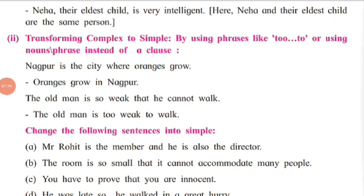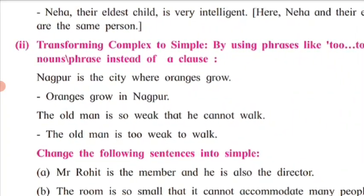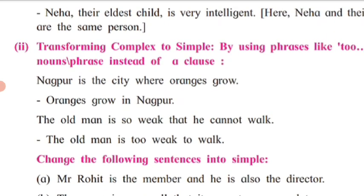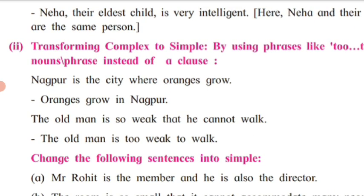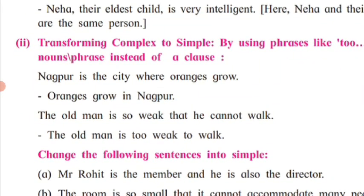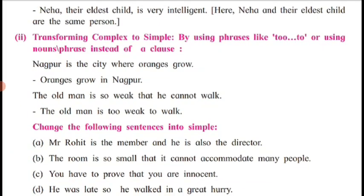Here is the example of applying apposition: 'Neha, their eldest child, is very intelligent.' Earlier it was written as 'Neha is the eldest child and she is very intelligent.' Here we have curtailed and modified it so that the subject Neha and 'the eldest child' are one and the same, and 'is very intelligent' is the only predicate we need. Neha and 'their eldest child' are the same person — this is how you can modify a compound sentence in such a way.